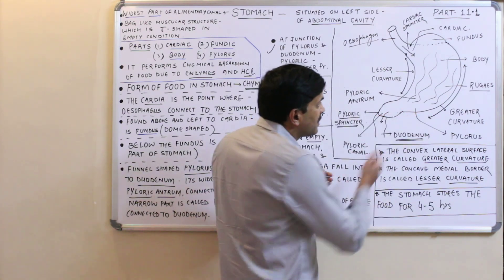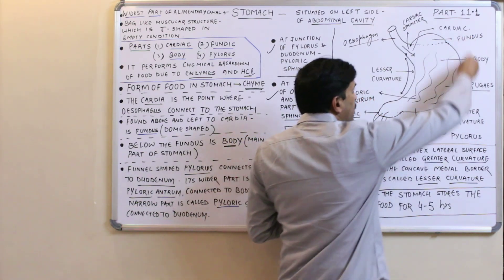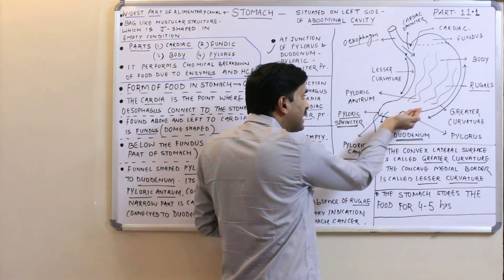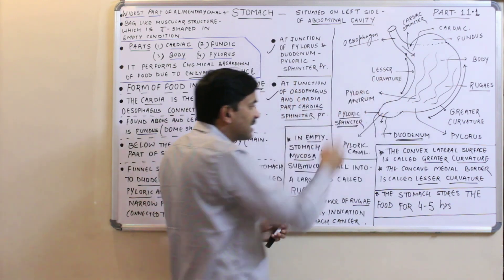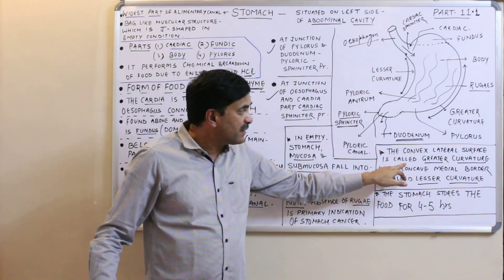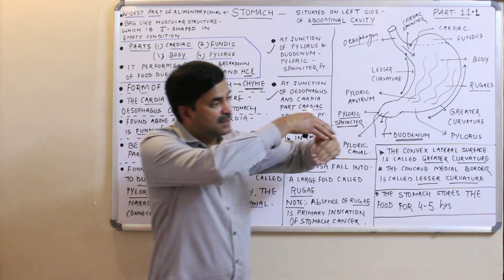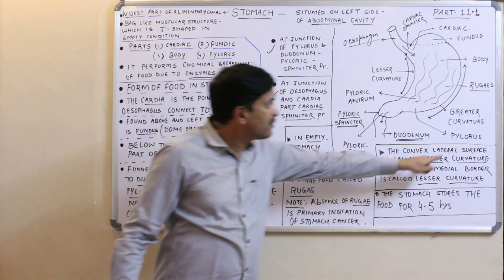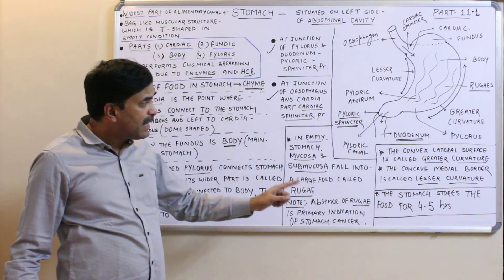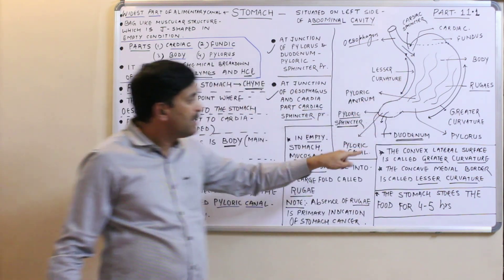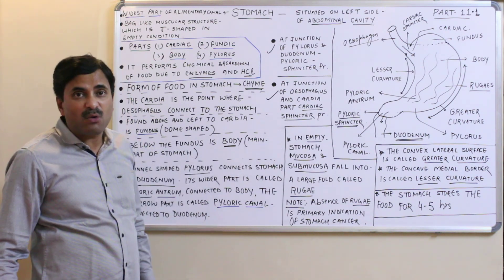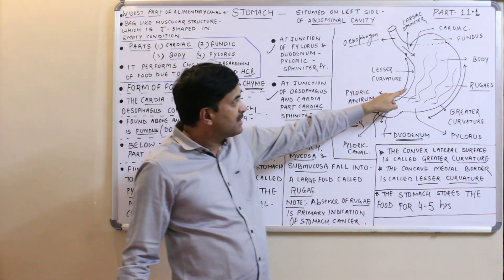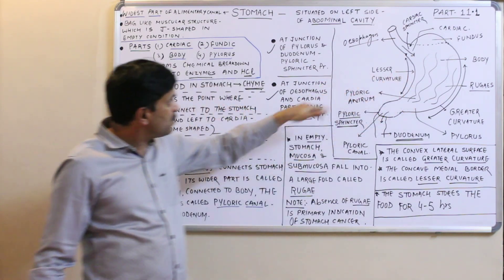The stomach has two curvatures. The convex lateral surface of the stomach is called the greater curvature, and the concave medial border is called the lesser curvature.